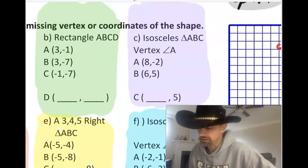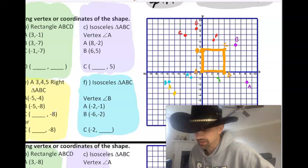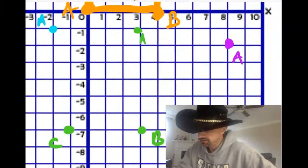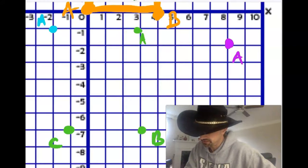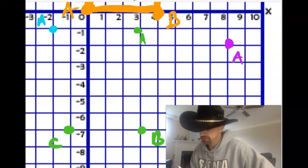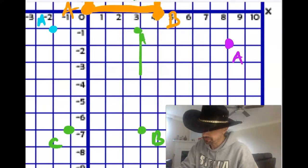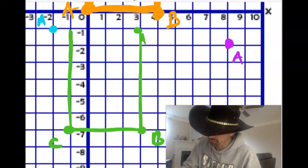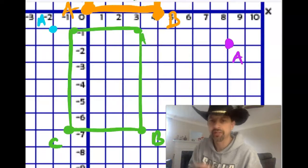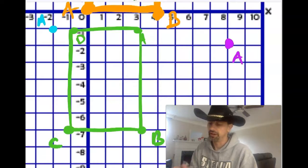B, the rectangle in green: 3,1, 3,-7, and -1,-7. So here is 3,-1, here's 3,-7, here's -1,-7. So if you're trying to make a rectangle out of this, A, B, C, you can almost tell perfectly that it would go right there. So if that's point D, it would be -1,-1.